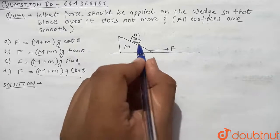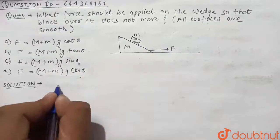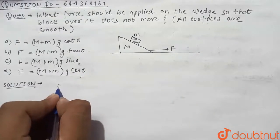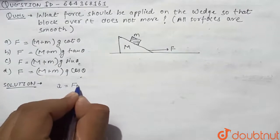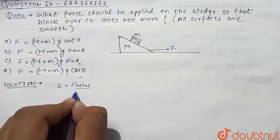If the block on the wedge does not move, then we can say that acceleration will be equal to total force by total mass.